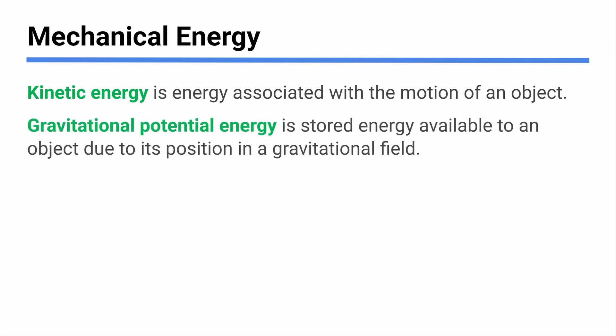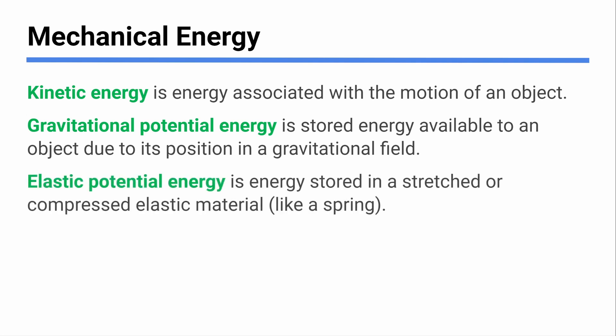In terms of potential energy, there are really two main types we're going to talk about: gravitational potential and elastic potential. Potential energy means stored energy. Gravitational potential energy is energy stored by a gravitational field because of where a thing is — basically, energy because something is up off the ground. You could let it go, gravity would pull it down, and energy would be released.